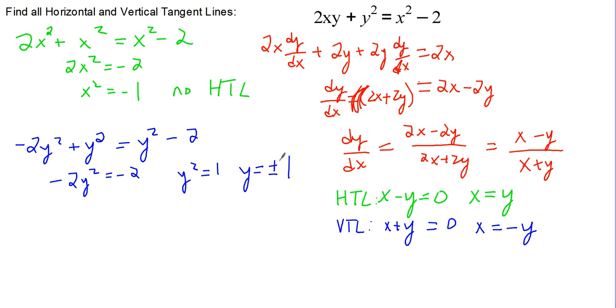We'll have to go and take both positive 1 and negative 1 and plug them back into our original equation to see what values we get for x. Because we're looking for the vertical tangent lines, which should have an equation of x equals something. If we plug in 1 for y, we end up with 2x plus 1 equals x squared minus 2, or x squared minus 2x minus 3 equals 0.